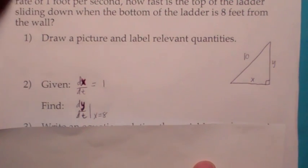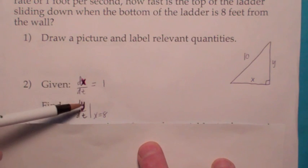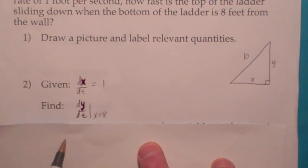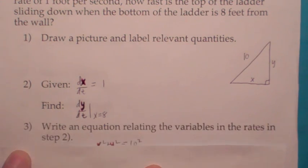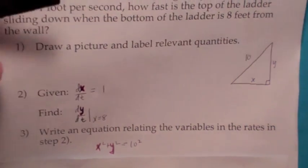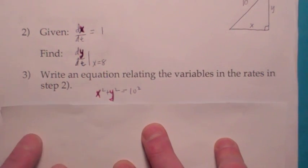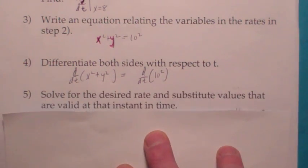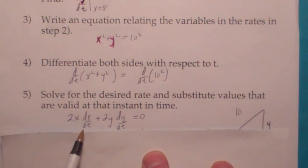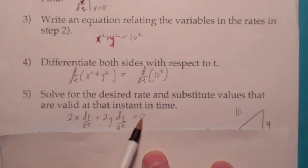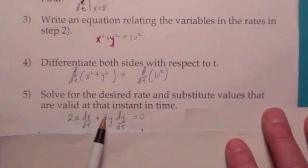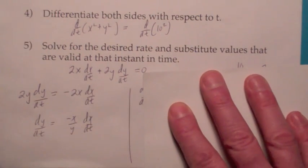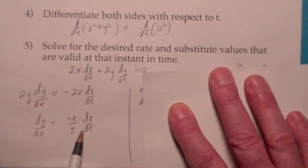This next step is the key. You need to write an equation that relates the variables in the rates here. What is the equation that relates x and y? That's right, it's the Pythagorean Theorem. And now what we're going to do is differentiate both sides with respect to t. Remember the derivative of the left side with respect to t becomes 2x times dx/dt plus 2y dy/dt. And on the right side you get 0. We're trying to find dy/dt. So if you solve this last equation for dy/dt, you end up with dy/dt equals negative x over y times dx/dt.